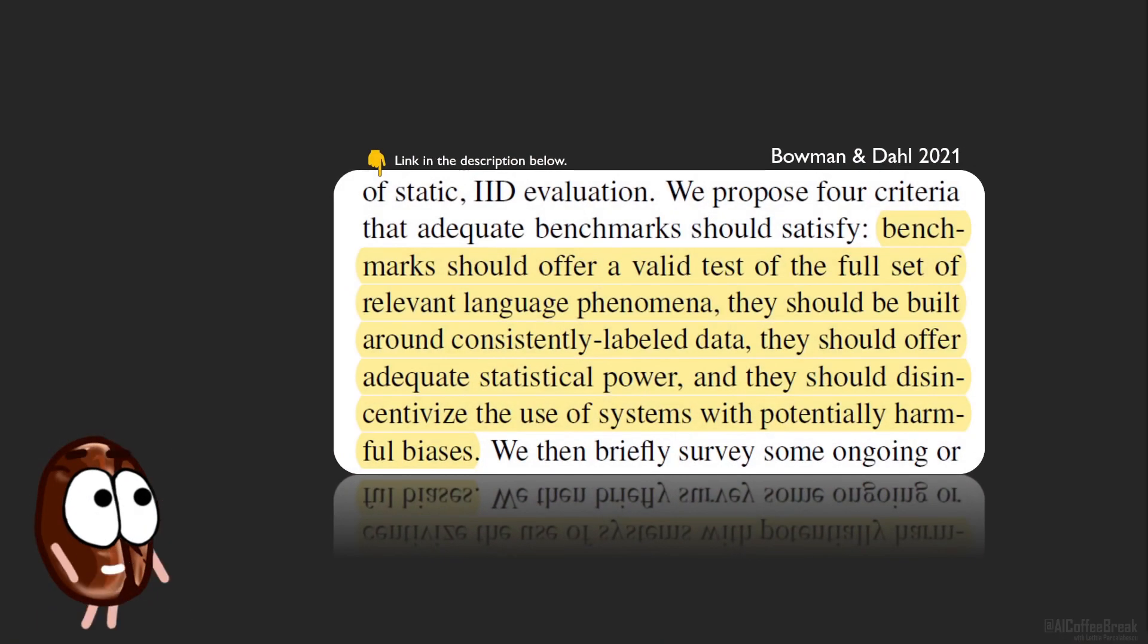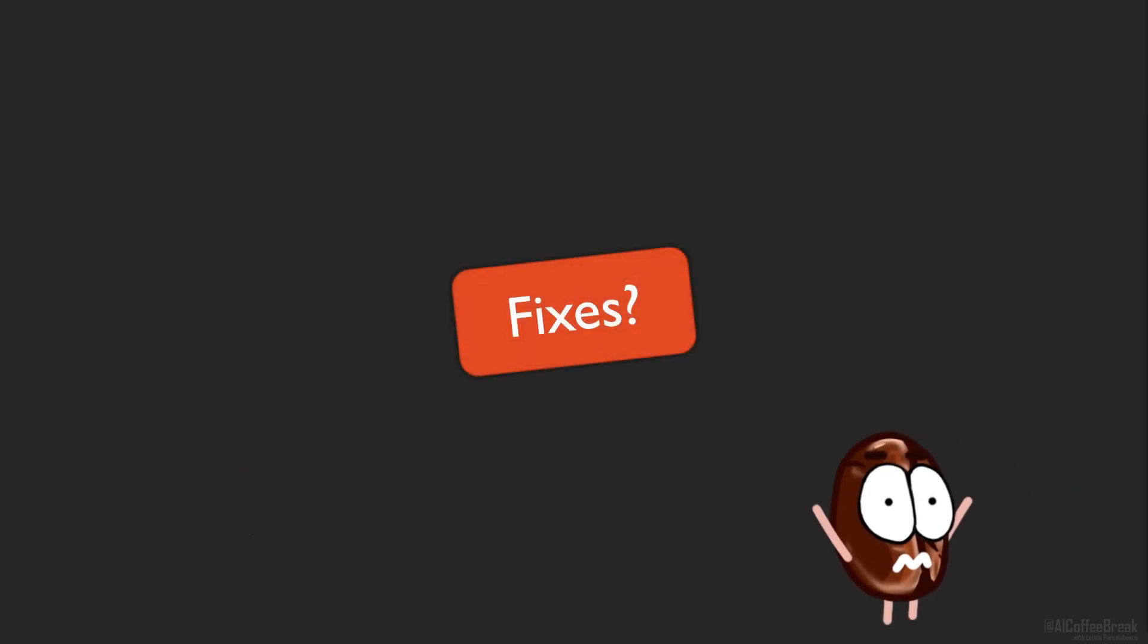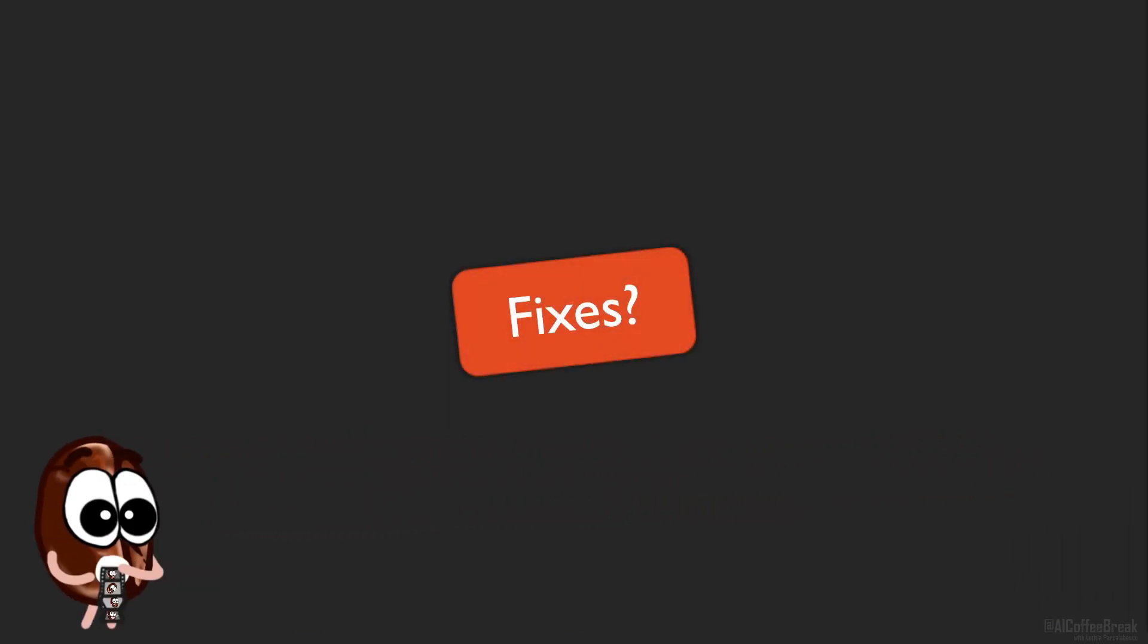Let's see what these four criteria are. We cite: benchmarks should offer a valid test of the full set of relevant language phenomena. They should be built around consistently labeled data. They should offer adequate statistical power. And they should disincentivize the use of systems with potentially harmful biases.